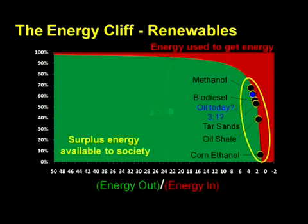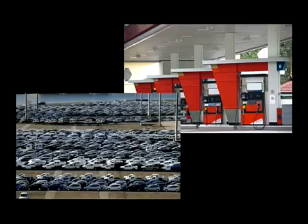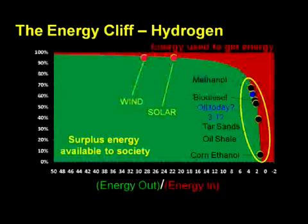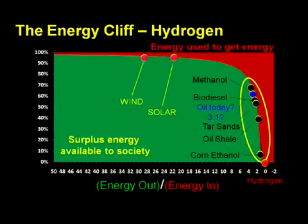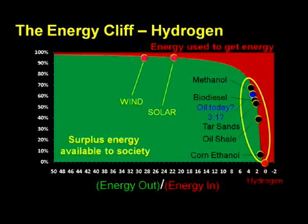Solar and wind are capable of producing pretty high net returns, but they produce electricity, not liquid fuels, for which we already have an extensive investment in distribution and use. And where is the so-called hydrogen economy on this chart? Right here — because there are no hydrogen reservoirs on Earth, every bit of it must be created from some other energy source, at a loss. Hydrogen is an energy sink. In creating hydrogen, we always lose energy — that's not pessimism, that's the second law of thermodynamics. Because hydrogen is a carrier of energy, not a source, it is more accurately described as a battery.